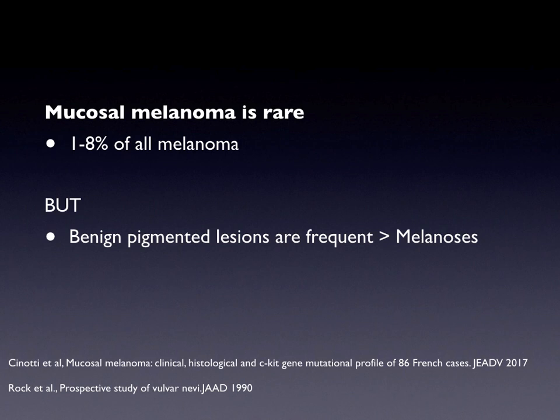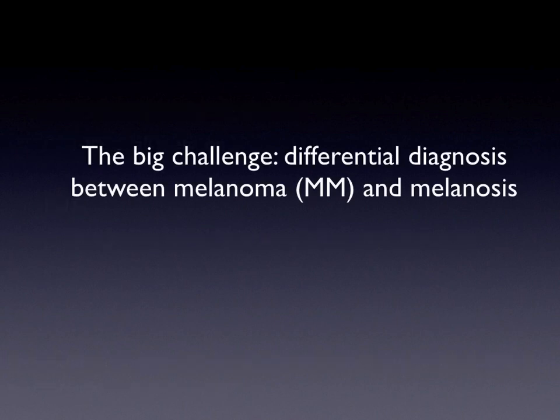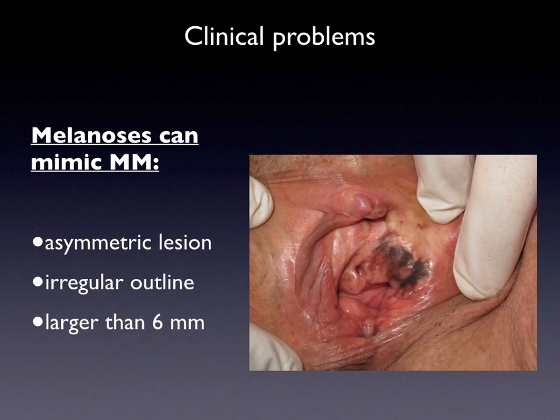For this reason, dermatologists are often asked to give their advice for pigmentation of the mucosa. The differential diagnosis between melanoma and melanosis is challenging because melanosis can be heavily pigmented and can be large, asymmetric with irregular borders, mimicking melanoma. This presentation will focus on the differential diagnosis between melanoma and melanosis.